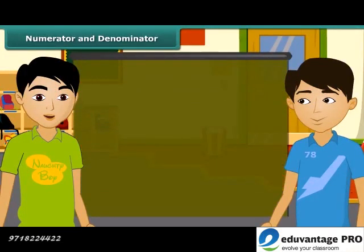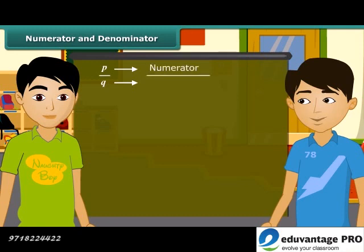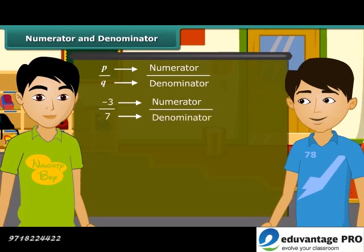Do you know what is the numerator and what is the denominator? In a rational number P by Q, P is the numerator and Q is the denominator. For example, in minus 3 by 7, the numerator is minus 3 and the denominator is 7.